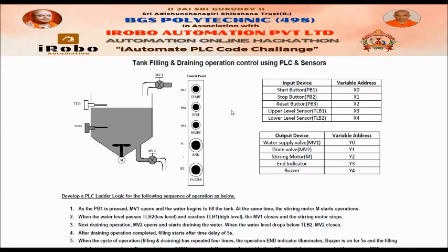There is a push button PB1 to start the process and a push button PB2 to stop the process. There is also a reset button PB3. There is an end indicator to indicate the end of the cycle, and there is a buzzer that will make a sound signal.